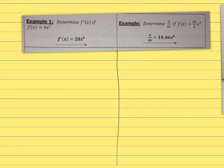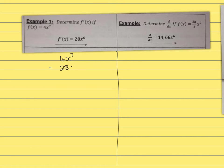Example 1: determine the derivative of f(x) if f(x) equals 4x to the power 7. You take the 7 and multiply it by 4, which gives you 28. Then the exponent becomes 7 minus 1, which is 6. So f'(x) equals 28x to the power 6.